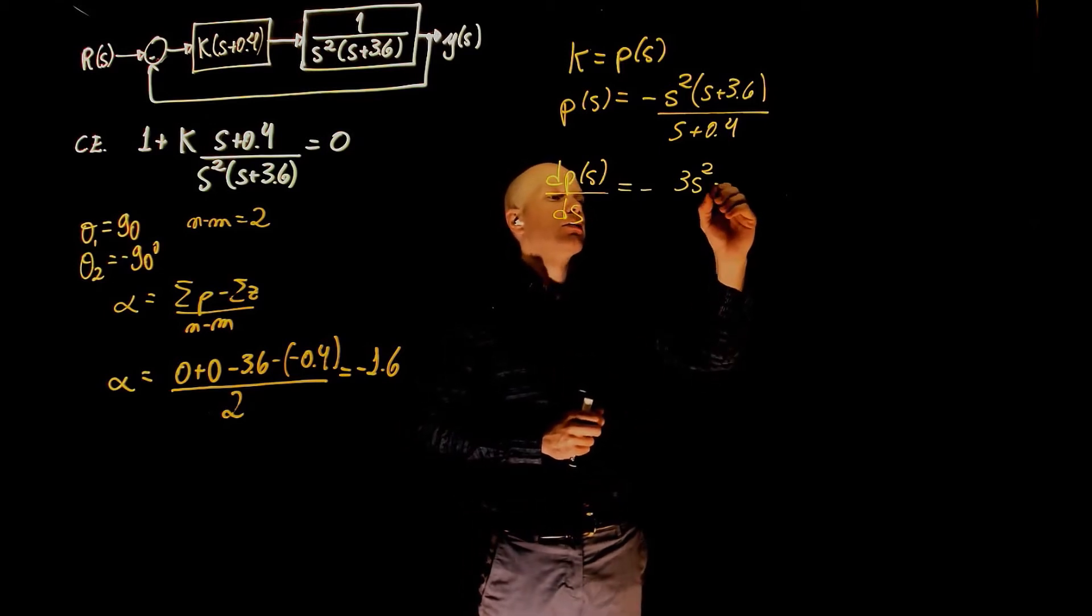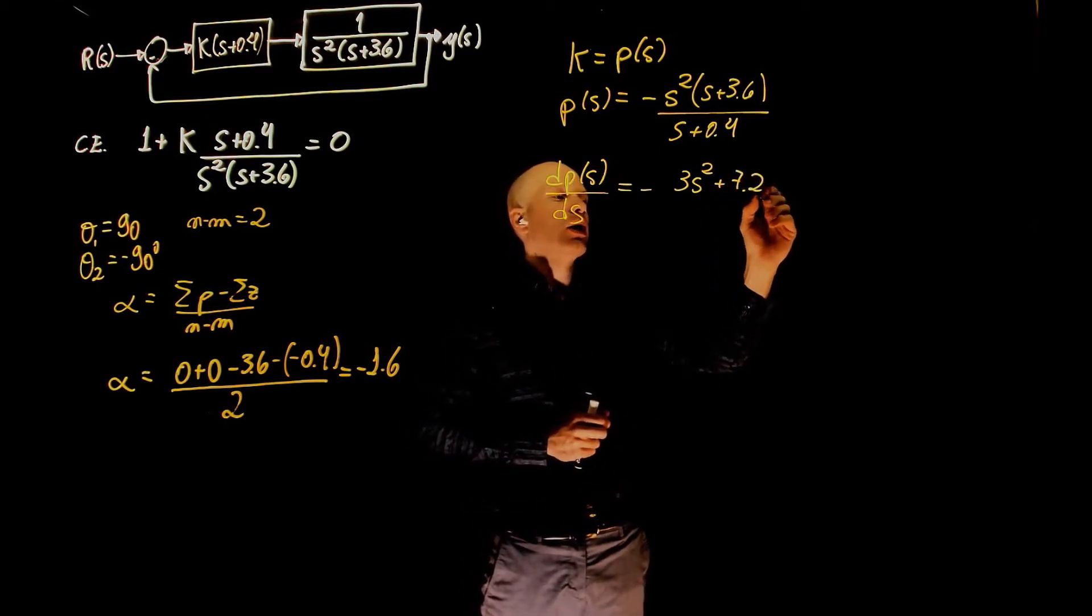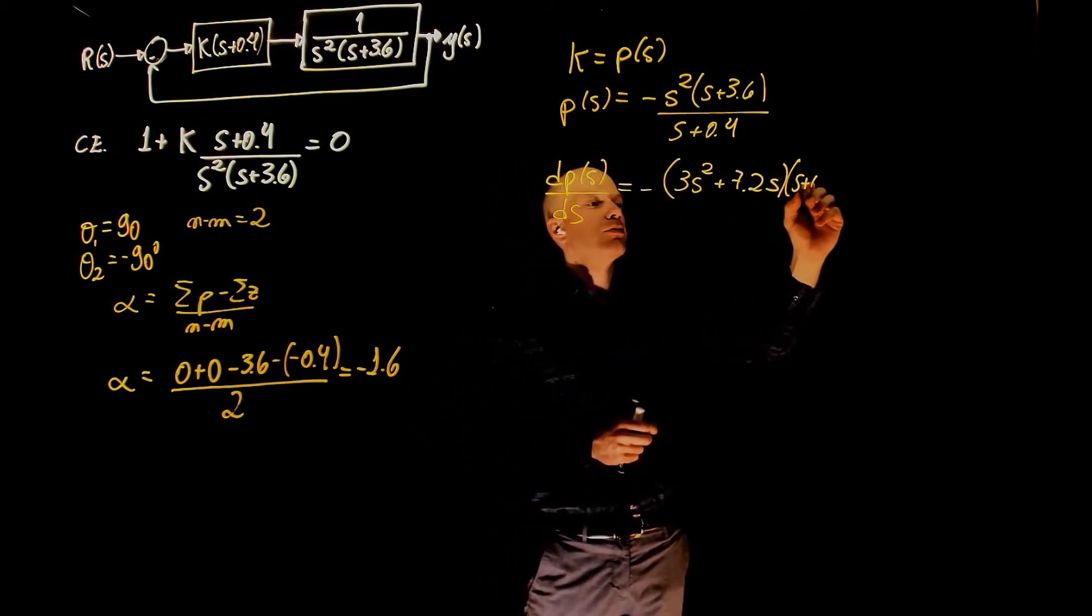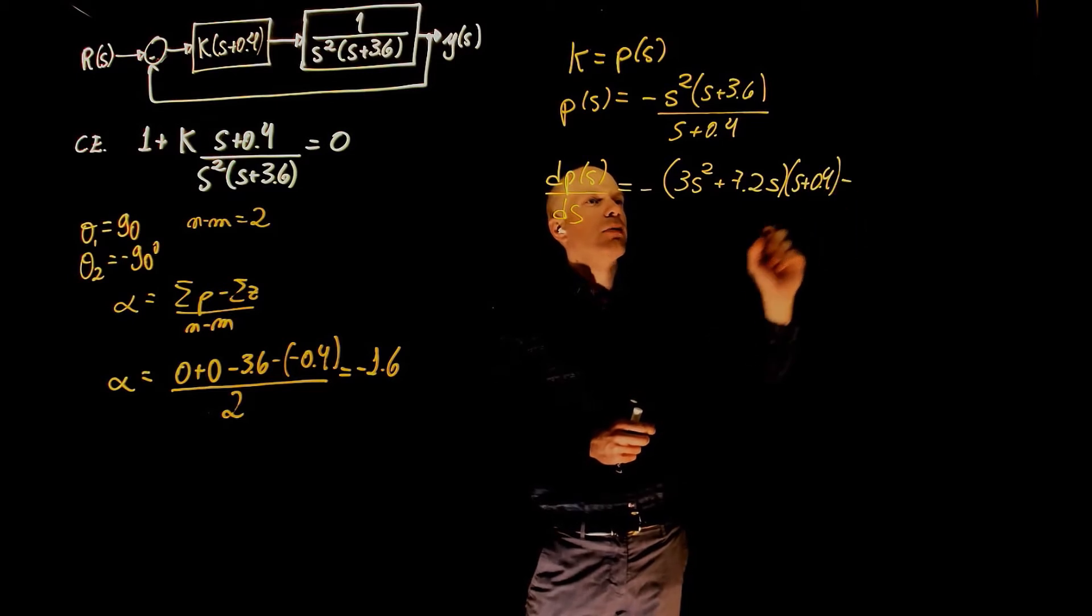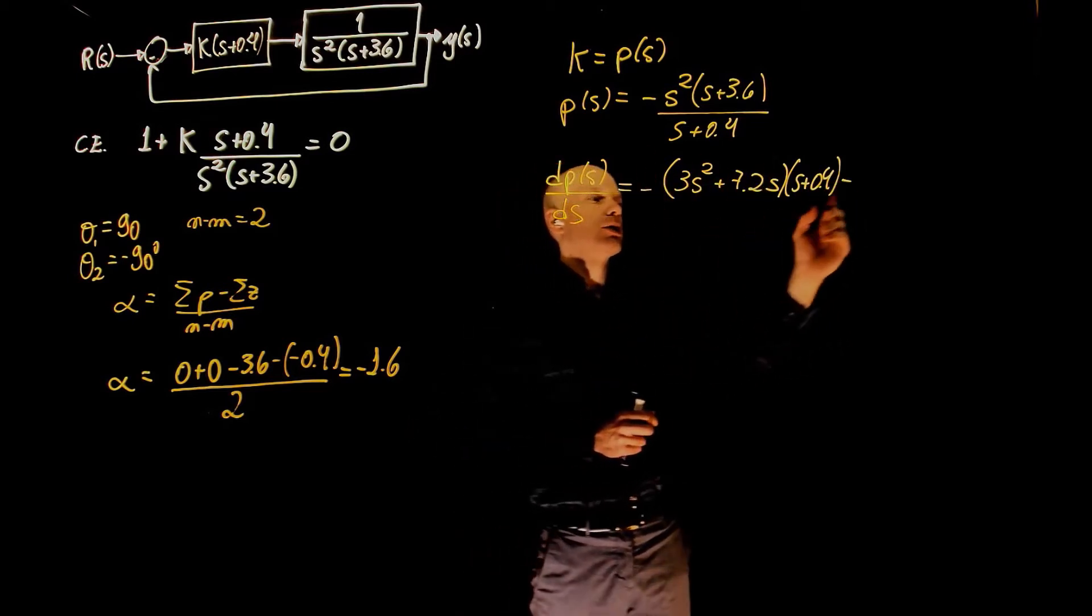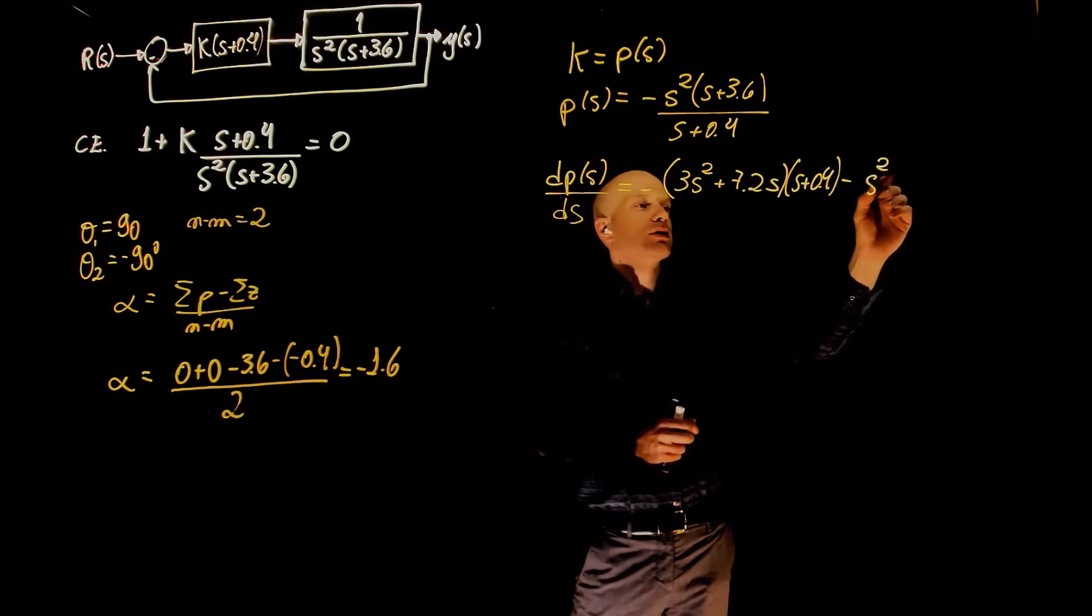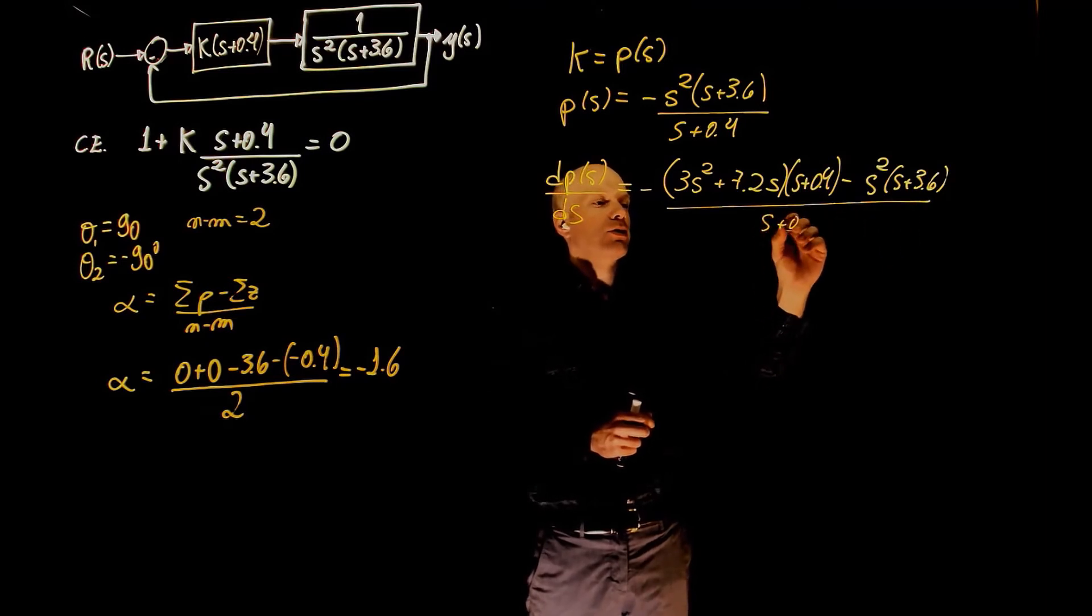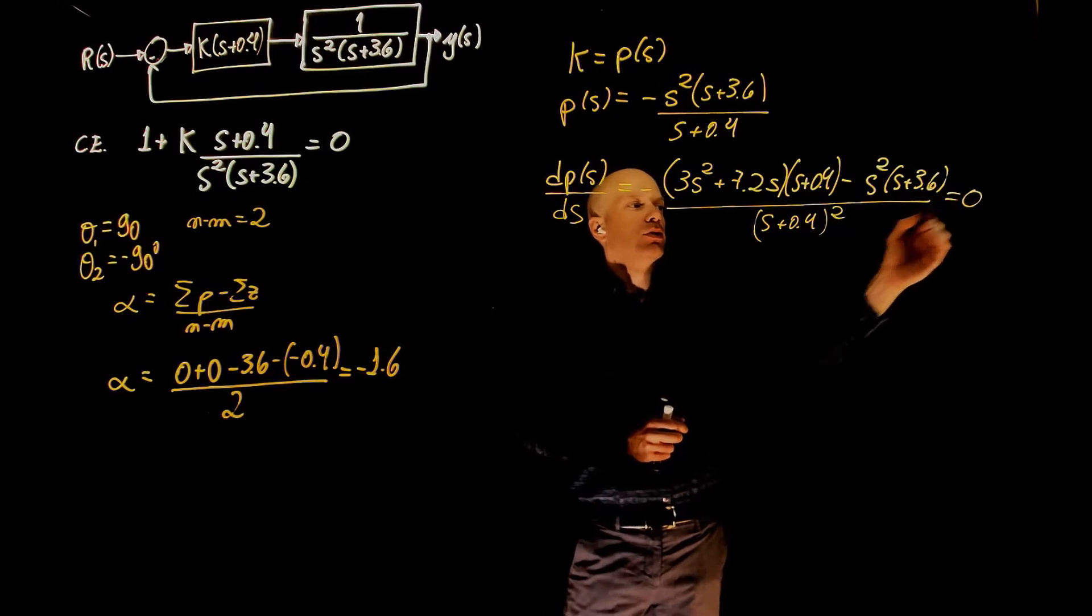that is plus 7.2s times s plus 0.4, minus the derivative of the bottom. This is simply 1 times the top, s squared, s plus 3.6, divided by s plus 0.4 is squared, and this is equal to zero.